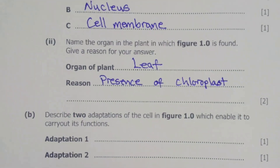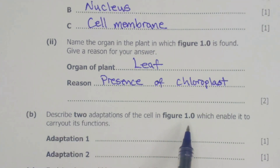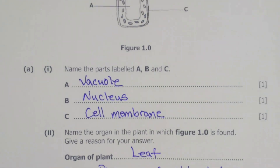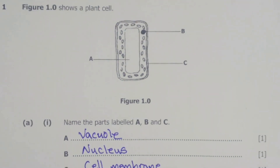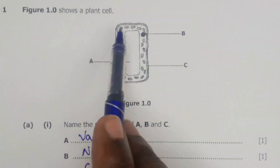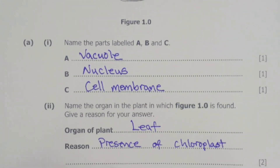The next part of the question is B, which says: describe two adaptations of the cell in figure 1.0 which enable it to carry out its functions. The first adaptation is that it has many chloroplasts. Apart from that, it has a rectangular shape. This rectangular shape enables it to have a large surface area. So those are the two adaptations.